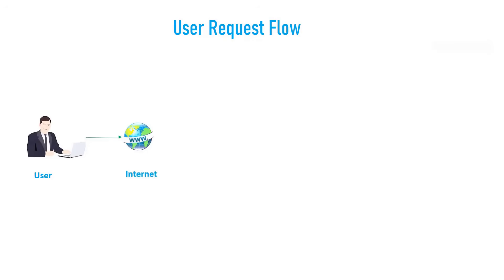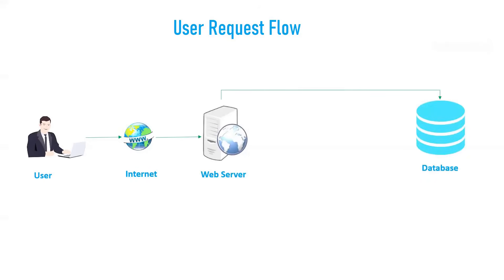Whenever a user accesses some application from the browser — if you are on the internet — first your request will reach the internet, and from there, when you are accessing a web application because you are using a browser, that application is deployed somewhere on a web server. From the internet, that request will reach the web server, and then the web server will display the website in front of you.